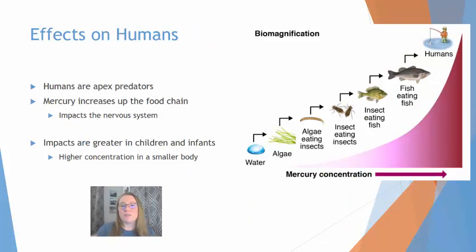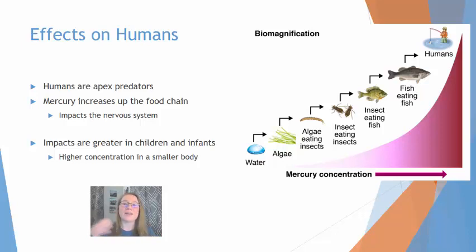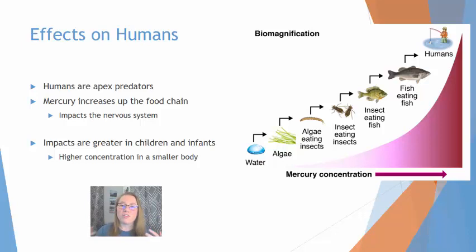Bioaccumulation and biomagnification also impacts humans, because humans are the ultimate apex predator. We are at the top of the food chain, and everything we eat has those lower trophic levels beneath it, and all of those toxins feed up to us.